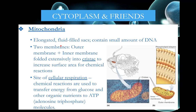Mitochondria are where cell respiration occurs. We take things like glucose, fats, or proteins, break them down, and use the energy released to produce ATP molecules, which we can use for other metabolic reactions.